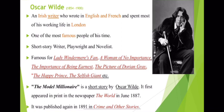This short story, The Model Millionaire, first appeared in a newspaper called The World and was first published in June 1887. It was published again in 1891 in Crime and Other Stories. So this short story was published twice.